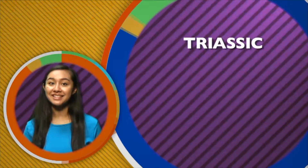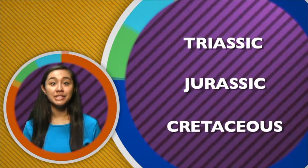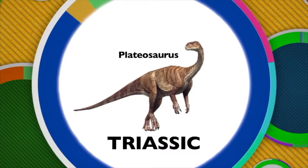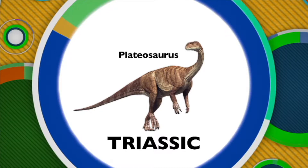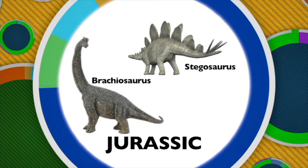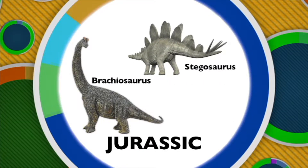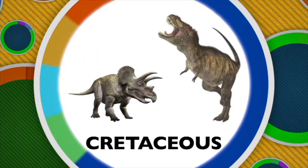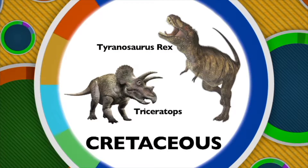Different dinosaurs appeared during different times of the Mesozoic Era. The Mesozoic Era is divided into three periods: the Triassic, Jurassic, and Cretaceous Period. Paleontologists have found many Plesiosaur skeletons — one of the oldest known dinosaurs. The Jurassic Period is the age of large dinosaurs, like the Brachiosaurus and the Stegosaurus. In the Cretaceous Period lived the Triceratops and the Tyrannosaurus rex.